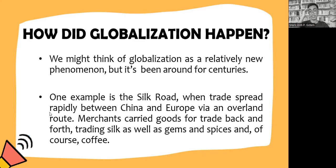The Silk Road was a network of trade routes — a path that connected East to West — to trade goods, labor, and services back and forth. The Silk Road was essentially a pathway or route for trading.